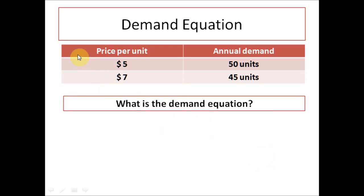So we have this scenario where this company sells the product at $5 per unit and then they get the annual demand of 50 units. When the company increased the price to $7 per unit, the demand fell to 45 units annually. We need to find out what is the demand equation.